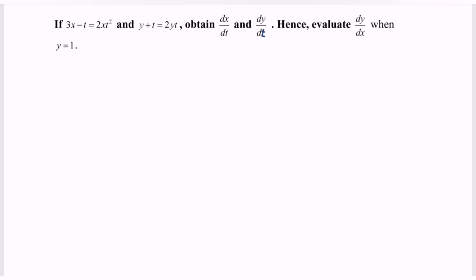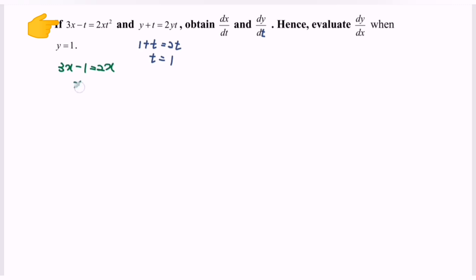So now I'm going to find the values of x and t. Substitute y equals 1 into the second function and we will have 1 plus t equals 2t, so t equals 1. Substitute t equals 1 into the first equation and we will have 3x minus 1 equals 2x, so x equals 1.